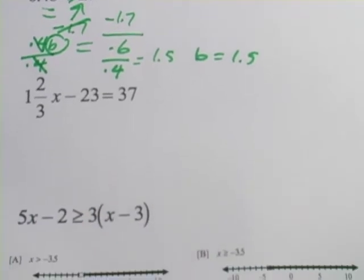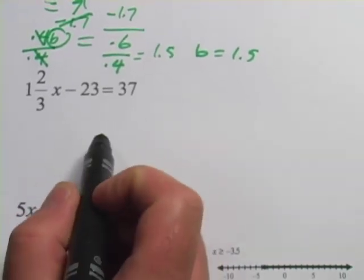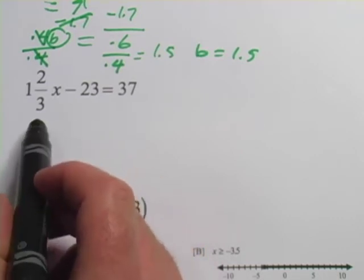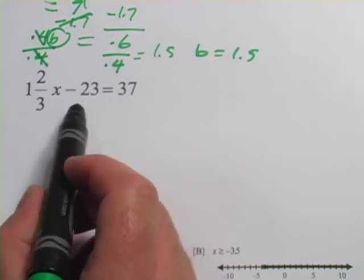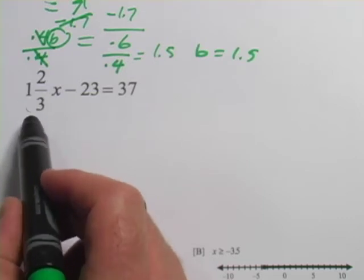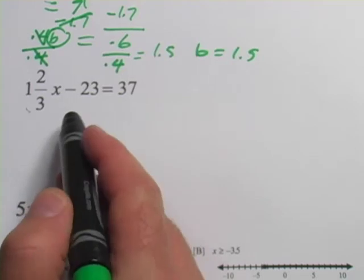This next one has fractions in it. We're going to do the same thing, but it's got fractions, so it might be a little bit trickier. I think I'm going to deal with the fraction in a minute. The first thing I'm going to do is get rid of this 23. I mentioned in the last problem that usually the last thing you do is get rid of whatever is multiplied by x, so I'm going to work on this part first.